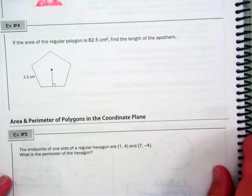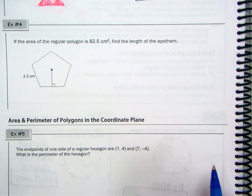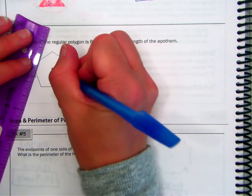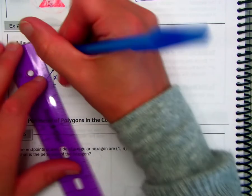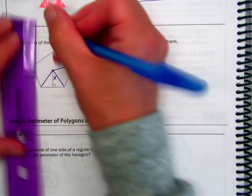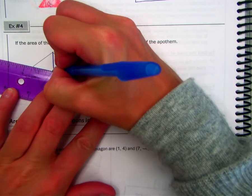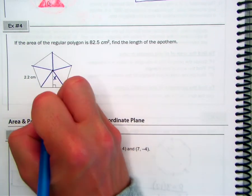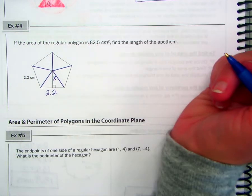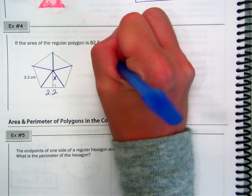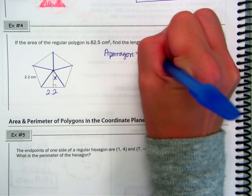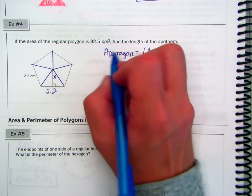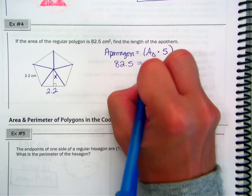Down below in number 4, it says that if the area of this regular polygon is 82 and a half, find the length of the apothem. So let's call that X. So there's five sides. We should have five triangles. So again, from the center, we draw a segment to each vertex. And I'm going to just look at this triangle right here because the altitude is drawn, so this would be 2.2. Now, in just generalizing or thinking about how we find the area of this pentagon, we would take the area of one triangle and multiply it by 5.